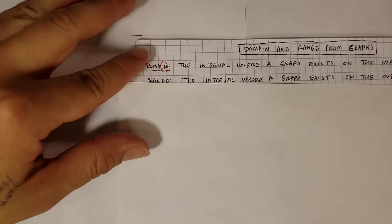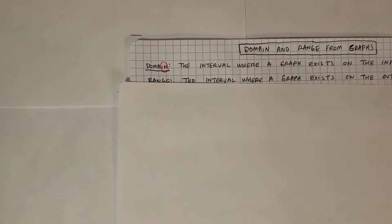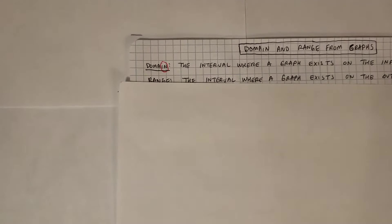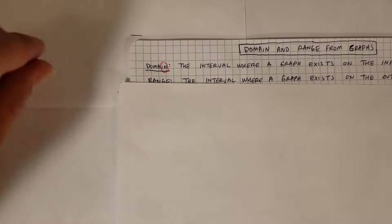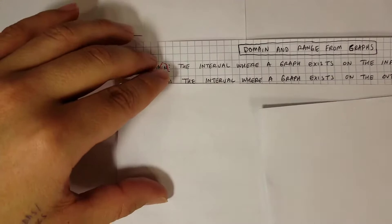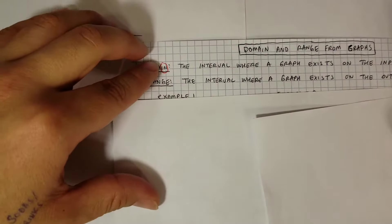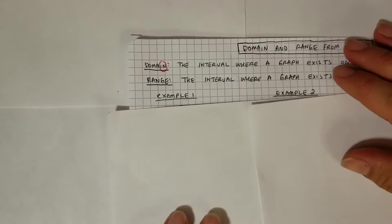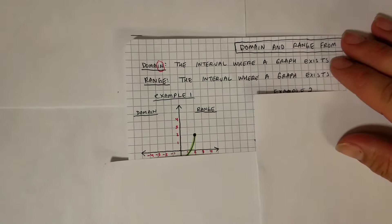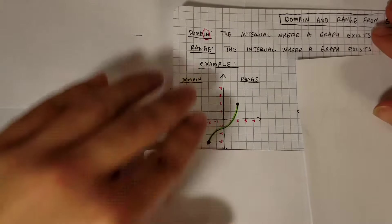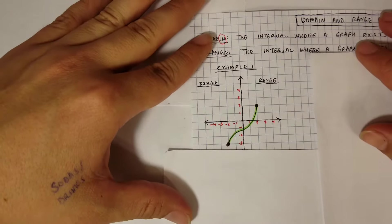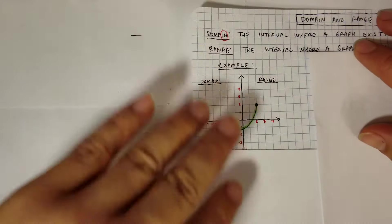We'll do some examples and work through them. Hopefully this will be enough examples to guide you so you can finish your assignment for this particular topic. Let's do example number one — what is the domain and range?